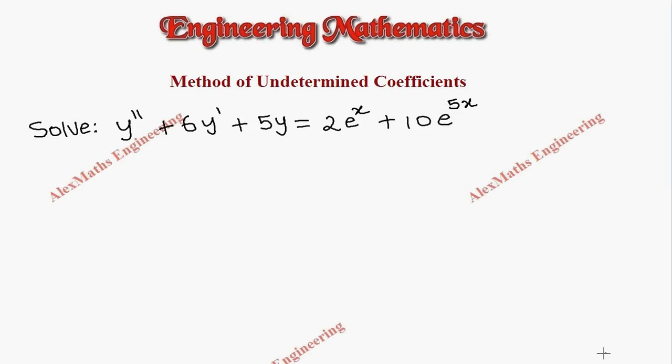Hi students, this is Alex here. In this video, we are going to solve a differential equation problem using the method of undetermined coefficients. Let's rewrite this equation. This is d squared plus 6d plus 5 into y equal to 2e power x plus 10e power 5x.